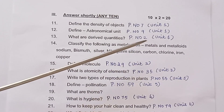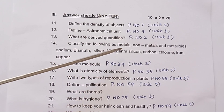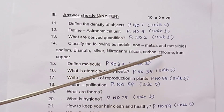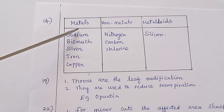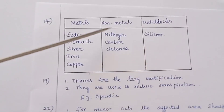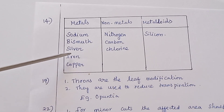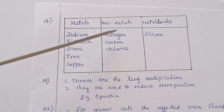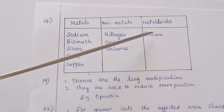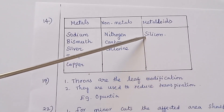Question 14: Classify the following as metals, non-metals, and metalloids — Sodium, Bismuth, Silver, Nitrogen, Silicon, Carbon, Chlorine, Iron, Copper. Metals: Sodium, Bismuth, Silver, Iron, Copper. Non-metals: Nitrogen, Carbon, Chlorine. Metalloids: Silicon — metalloids show both the properties of metals and non-metals.